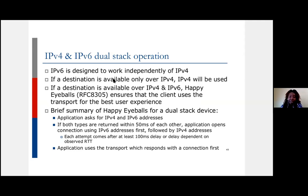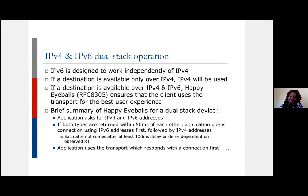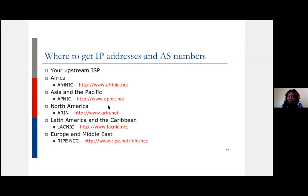With IPv4 and IPv6 in dual stack, you can take advantage of Happy Eyeballs — where the services you're using determine which transport offers better connectivity and use that. If IPv4 to Facebook is better in your region you'll be served over IPv4, but if IPv6 is better and the network supports it, you'll be served over IPv6. Essentially, whichever transport responds faster to the connection request wins.